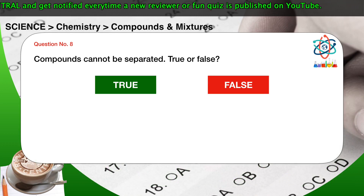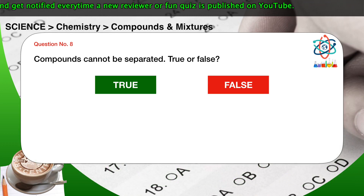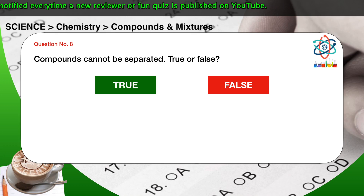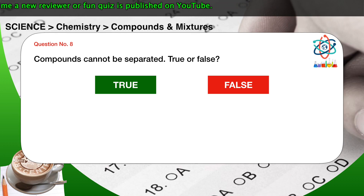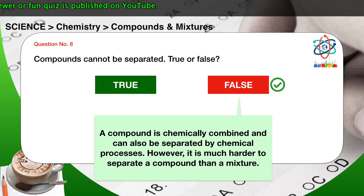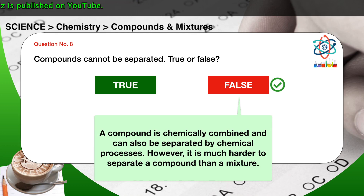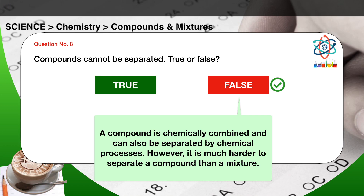Question number eight: compounds cannot be separated — true or false? The correct answer is false. A compound is chemically combined and can be separated by chemical processes; however, it is much harder to separate a compound than a mixture.